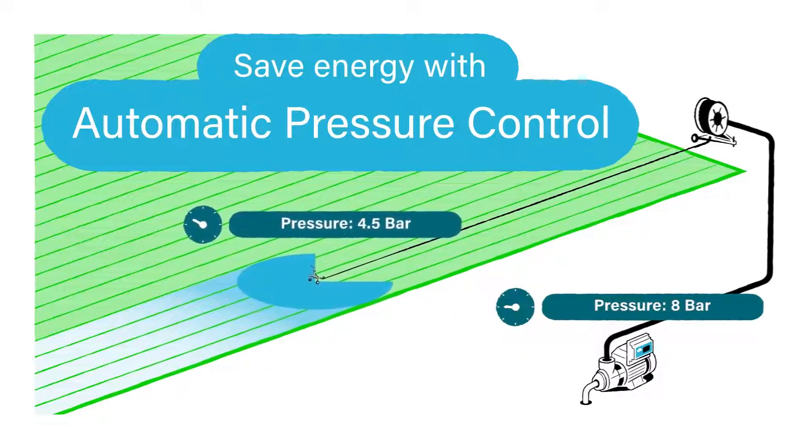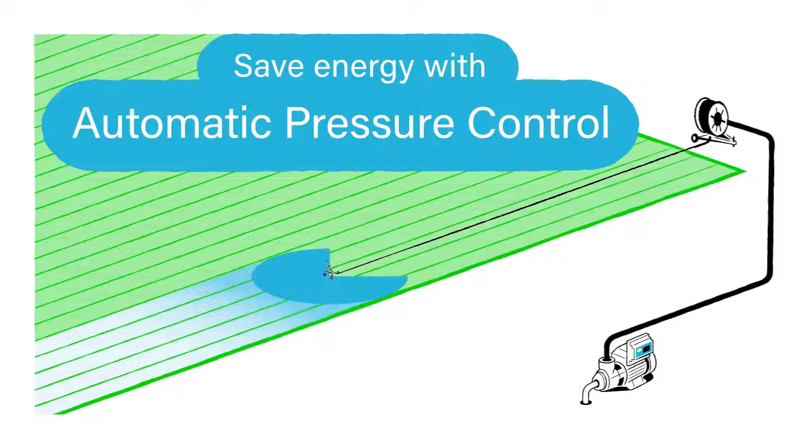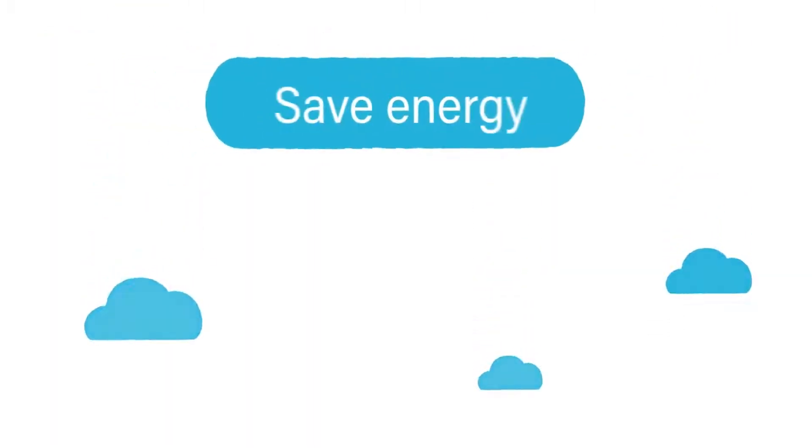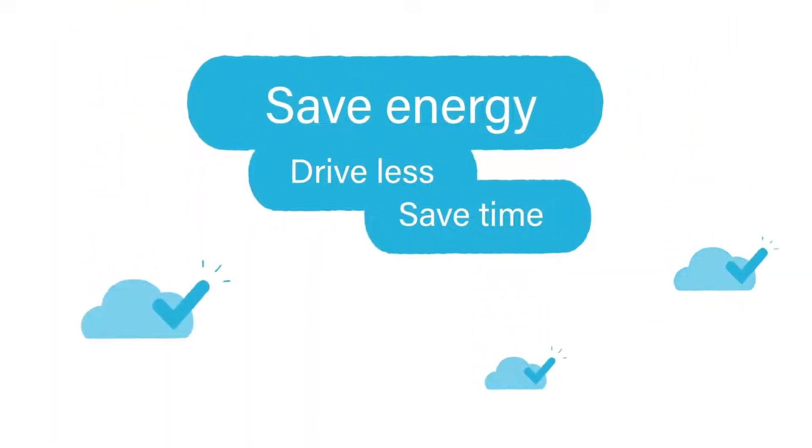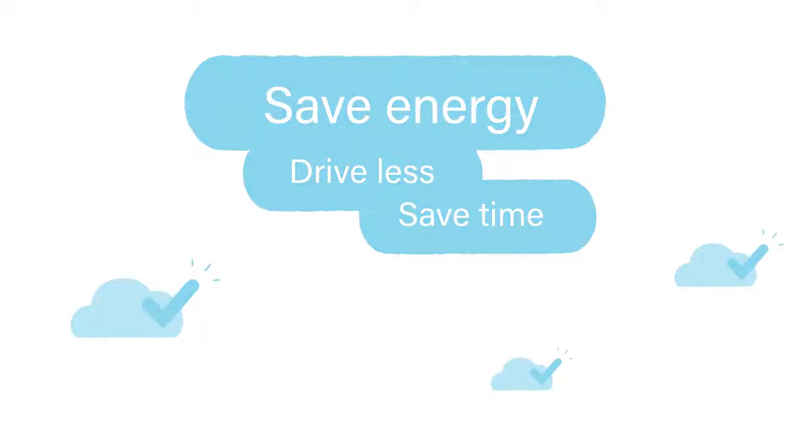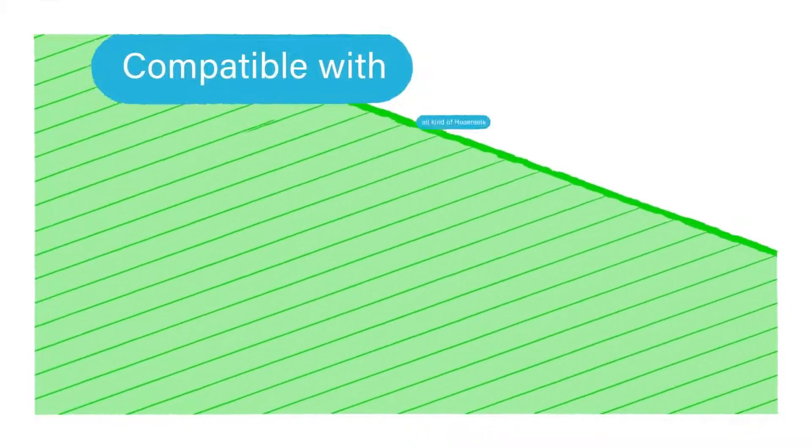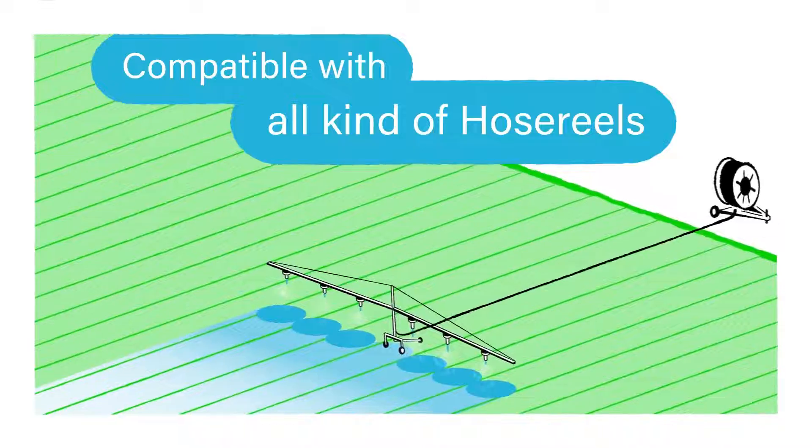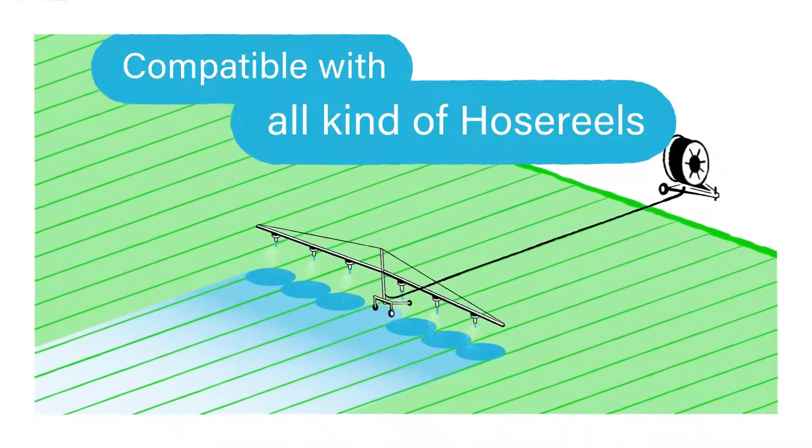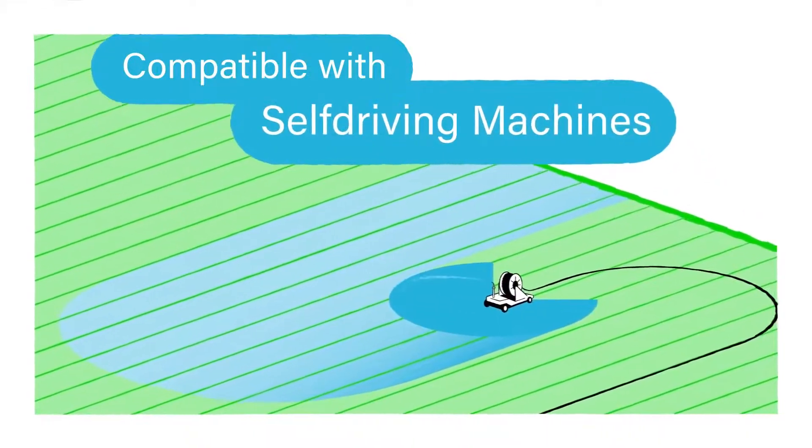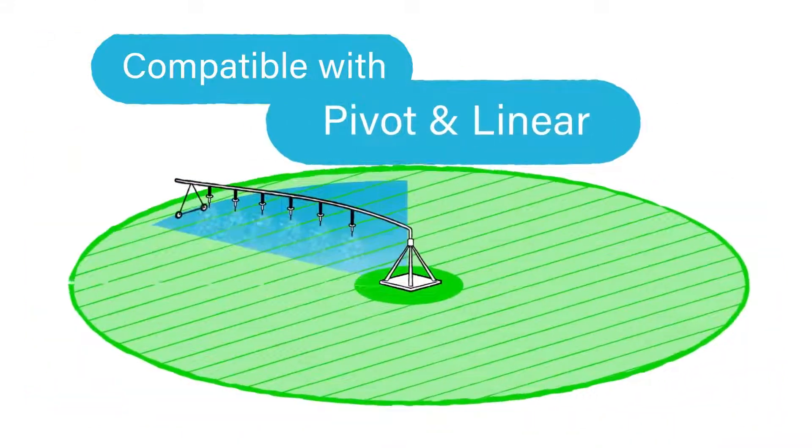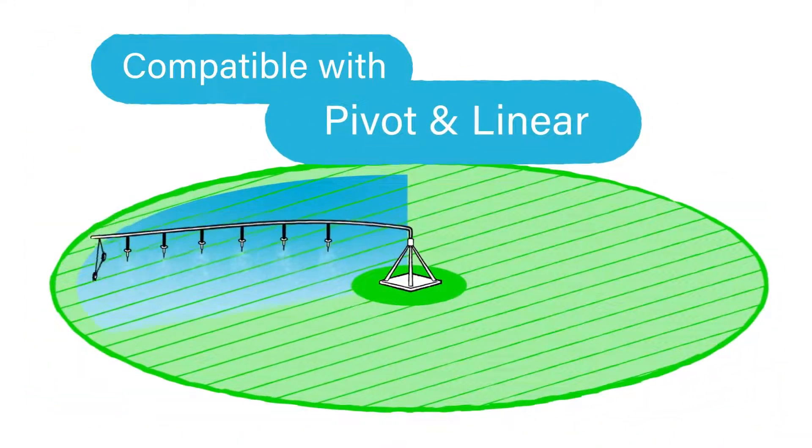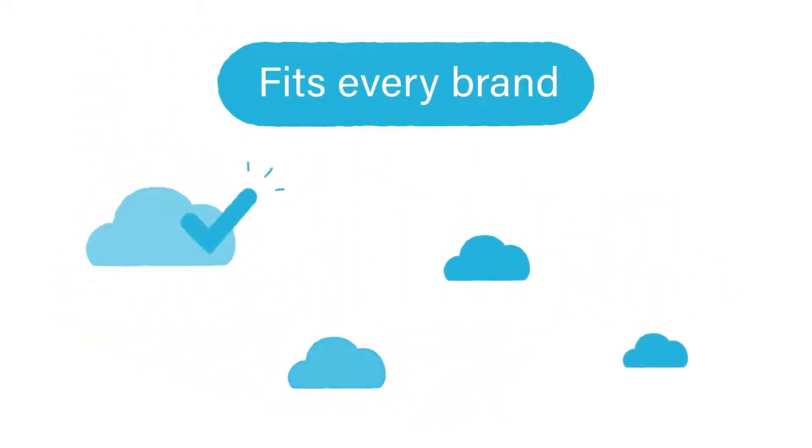Rain Dancer is compatible with all kinds of hose reels. It doesn't matter if it is an irrigation gun, a boom machine, or a self-driving machine. But not just hose reels, it can also be used on pivot and linear machines. Rain Dancer is retrofittable and fits to every brand. It even works on very old machines.